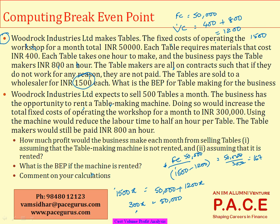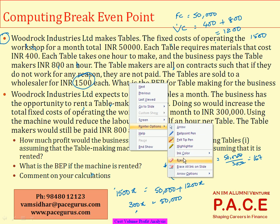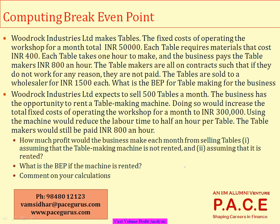Either way, whatever mechanism you use to compute the break-even point, it gives a conclusion: you need to produce and sell at least 167 tables during this period in order to break even — that is, to not generate a loss.